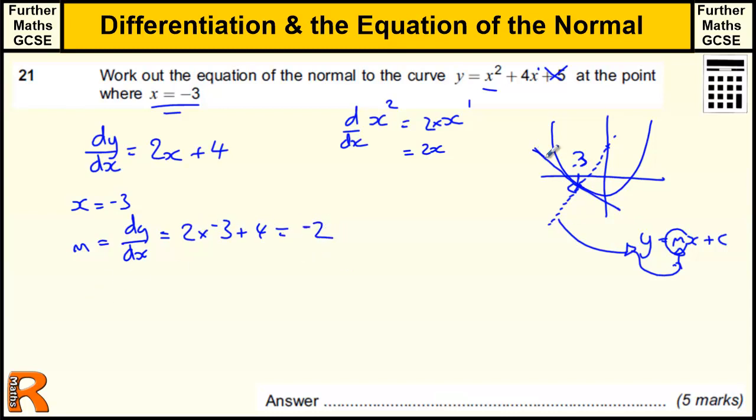So our gradient this way, the gradient of that line is equal to minus 2. So if we want the gradient of the normal to that, the tangent to that, perpendicular to that even, not the tangent, that is the tangent, the perpendicular to that,